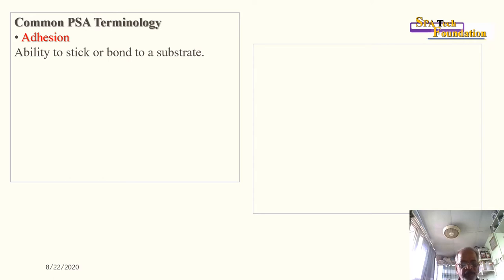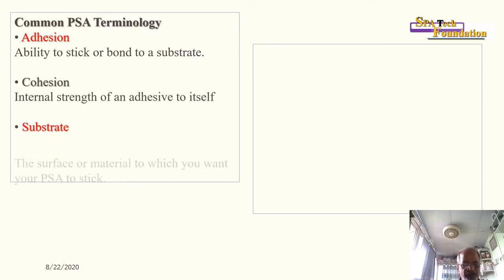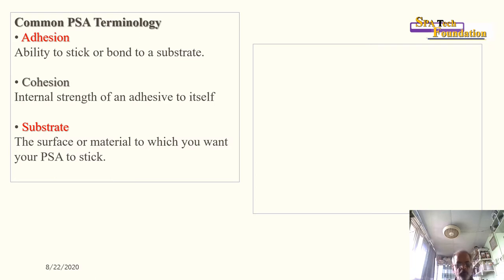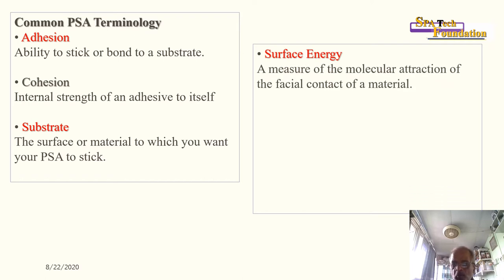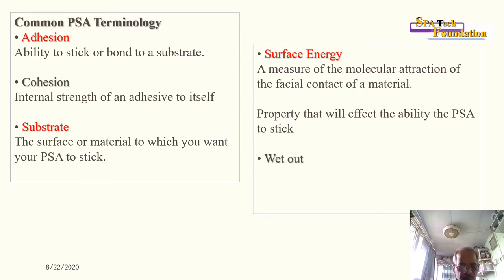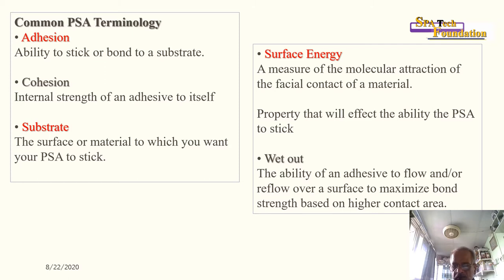Key PSA terminology: adhesion is the ability to stick or bond to a substrate. Cohesion is the internal strength of an adhesive to itself. Substrate is the surface or material to which you want your PSA to stick. Surface energy is a measure of molecular attraction at the surface contact of a material — a property that affects the ability of a PSA to stick. Wet-out is the ability of an adhesive to flow over a surface to maximize bond strength based on higher contact area.